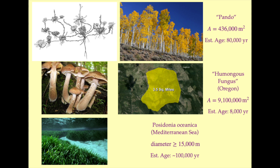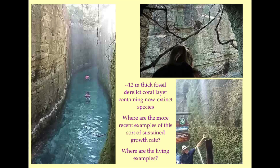There are a great many clonal colonies that are extremely large in comparison to their rate of expansion. Some of the more spectacular examples are the quaking aspen colony known as Pando, the humongous fungus of Oregon, and a colony of Posidonia oceanica on the floor of the Mediterranean Sea. These, and many other examples from around the world, yield dates that are much larger than can be admitted by the young Earth hypothesis. Similar examples of physically implausible growth rates can be found in the fossil record — for instance, a 12-meter-thick derelict coral layer from the Yucatan Peninsula in Mexico. When and how in the young Earth timeline did this formation occur, and where are the modern analogues?